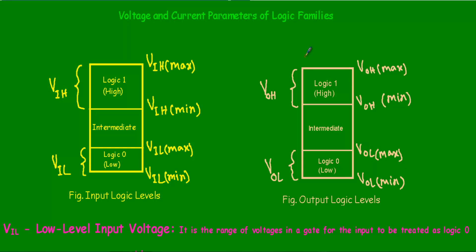In this video I will talk about different voltage and current parameters associated with our digital logic families. When we use binary logic — logic 0 or logic 1 — we specify those logic labels by applying different voltages. To specify logic 0 or logic 1 we don't apply a fixed voltage; rather we use a range of voltages, shown here as input logic labels and output logic labels.